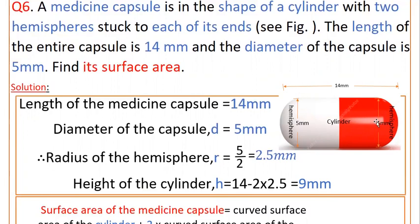So subtract on either side the radii parts. 14 minus 2 times 2.5. The radius is 2.5 mm, so 2 times 2.5 equals 9 mm. This is the length of the cylinder.